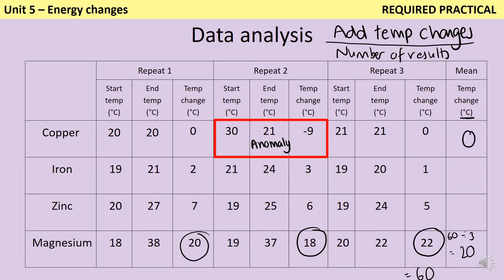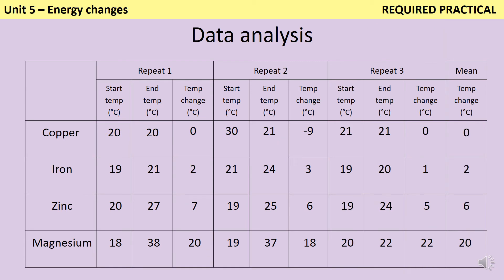You might be asked to suggest how that anomaly has happened. And looking at this, I would suggest that the starting temperature is very, very high. That might be because somebody has misread the thermometer, or it might be if they've completed these four investigations first and then moved on to repeat two, that possibly their thermometer was still quite warm after doing the first magnesium reaction and it hadn't completely cooled down before they started the second reaction. Pause the video now and see if you can work out what the mean temperature change for iron and for zinc is. Hopefully that wasn't too challenging, and you managed to work out that the temperature changes are 2 and 6.